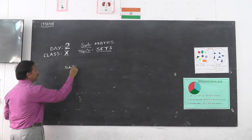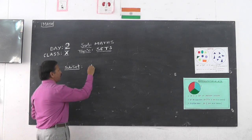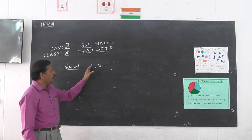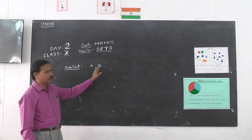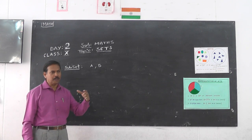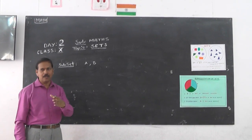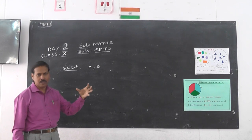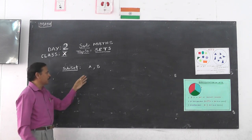What is a subset? If A and B are two sets and all elements of set A are present in set B, then we say A is a subset of B. For example, in St. Peter's school there are many classes — 10th A, 10th B, 10th C, 9th B — all these classes are subsets of St. Peter's school. So St. Peter's school is the main set and all the classes are subsets of that set.